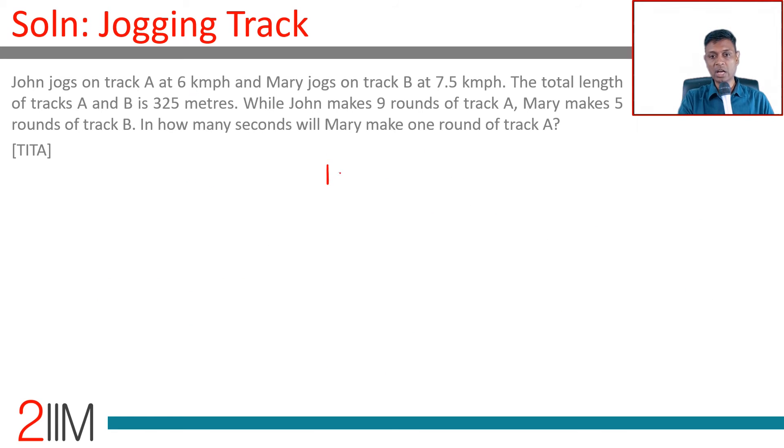So 100 meters traveled at the rate of 7.5 kilometers per hour. 7.5 into 5 by 18 meters per second. We're converting kilometers per hour to meters per second. 100 by this—that many seconds it'll take.